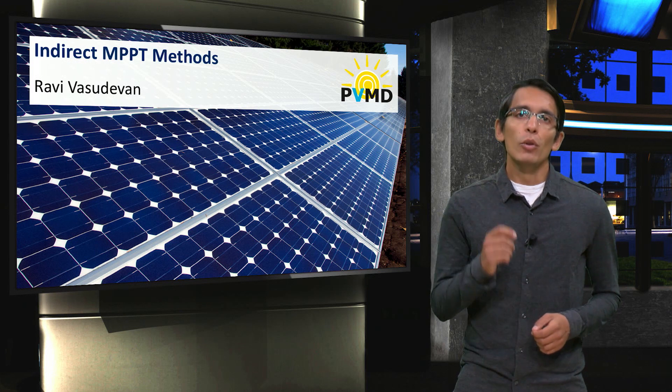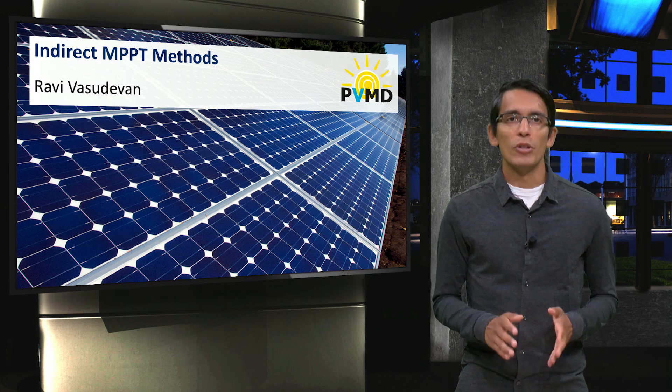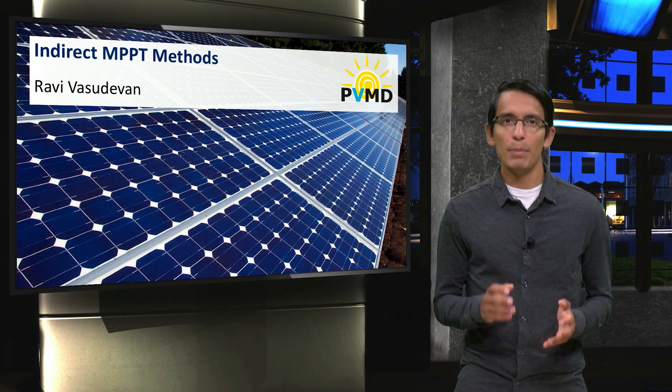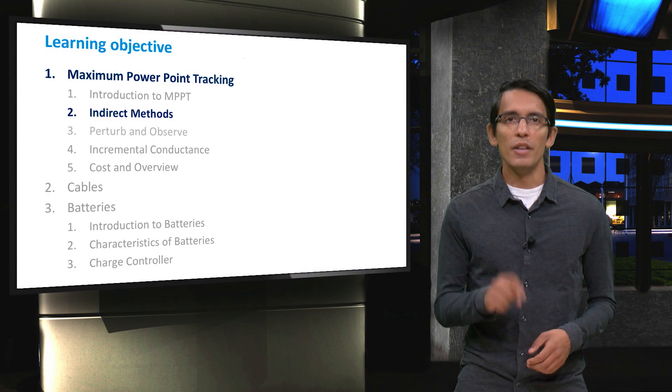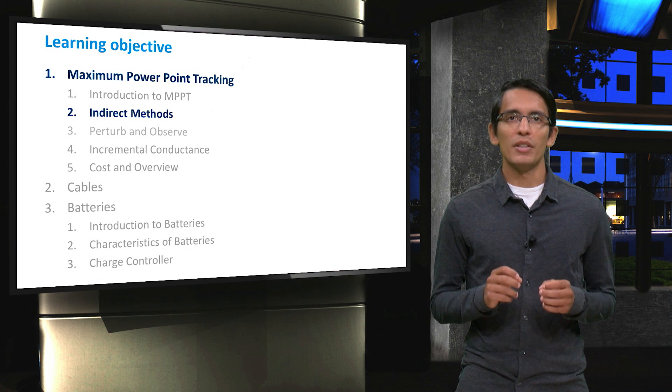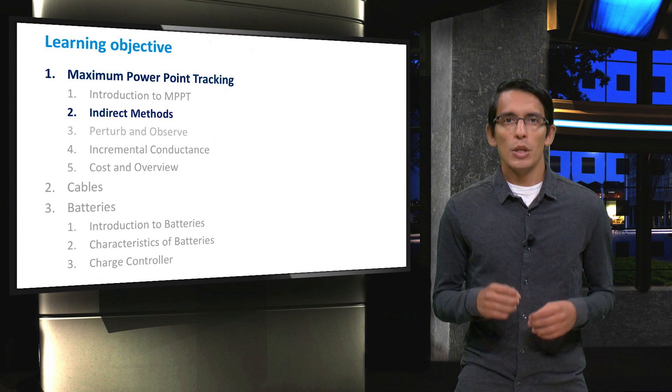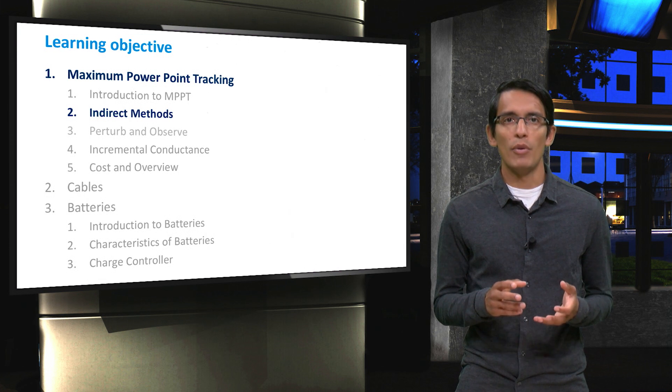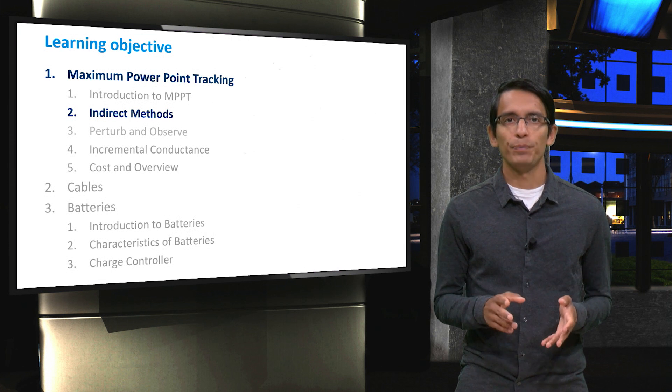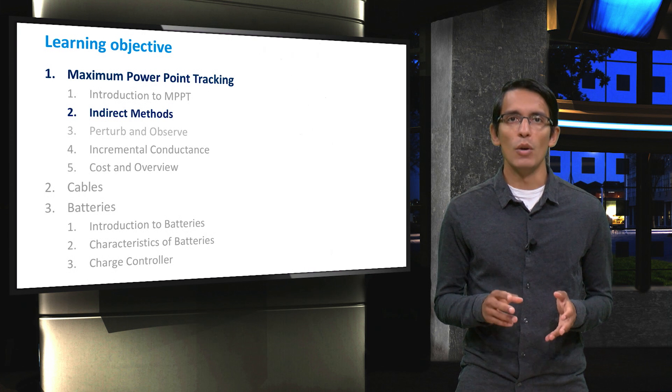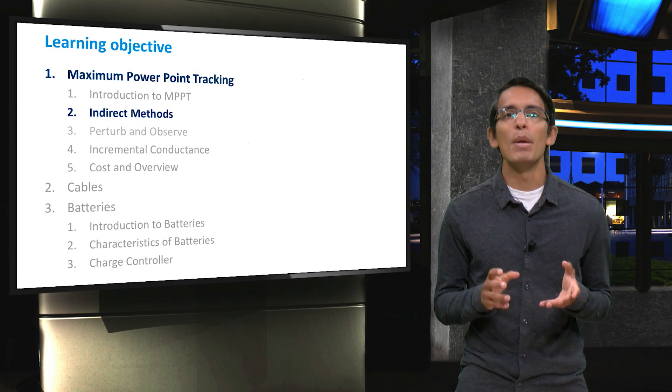In the previous video, you learned about the concept of maximum power point tracking and why it is necessary in a PV system. In this video lecture, I will discuss some techniques that can be used to perform this MPPT function on a solar panel. You will learn about how these techniques are operated and how they differ from each other. All the techniques in this video can be described as indirect MPPT methods.